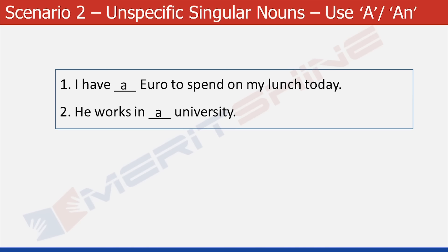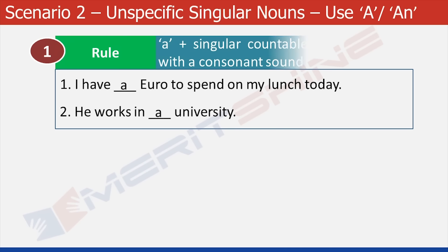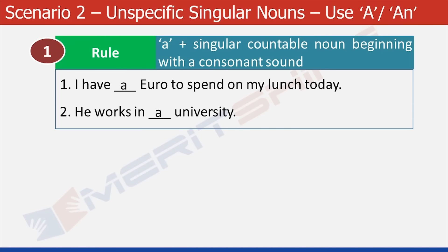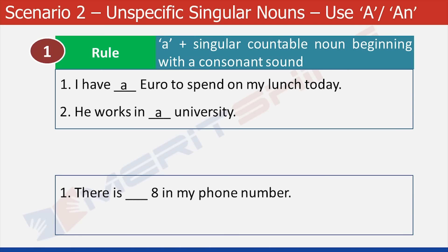So be careful with words which have the 'yoo' sound — they will not take AN as an article. The rule we have learnt here is: a singular countable noun beginning with a consonant sound takes article A. Try this one: There is a dash 8 in my phone number. 8 has a vowel sound, and hence it would take AN.